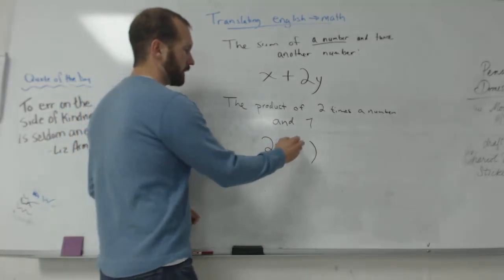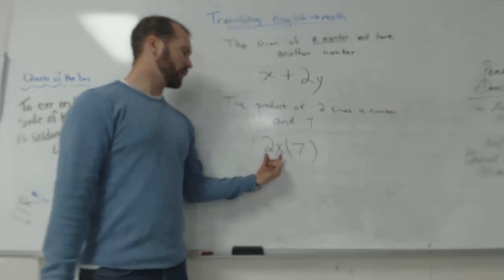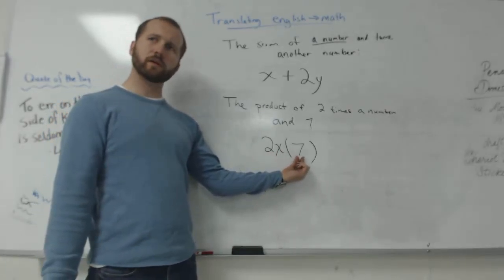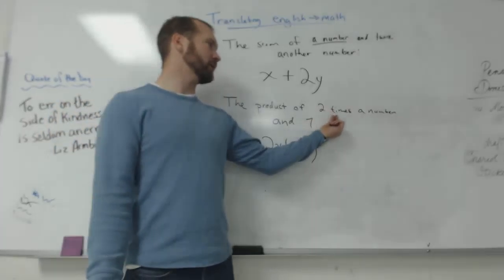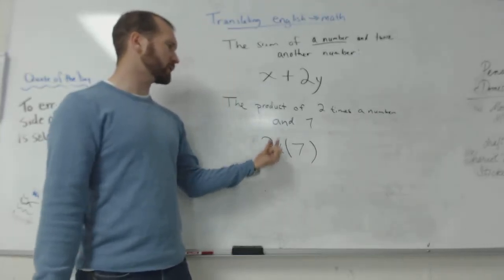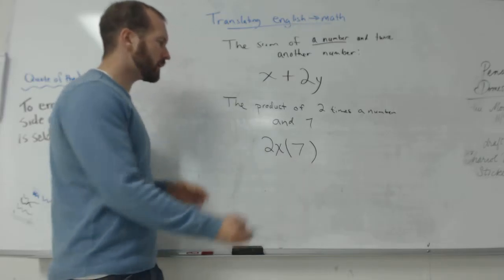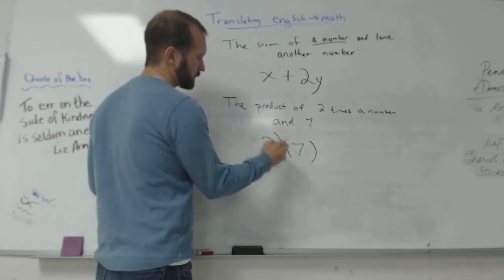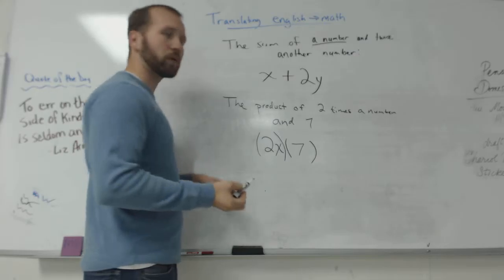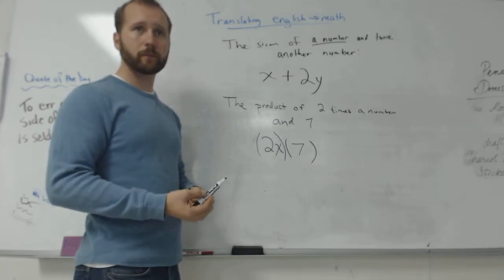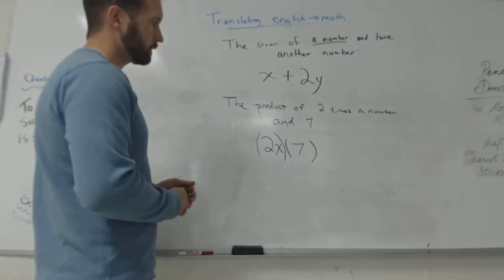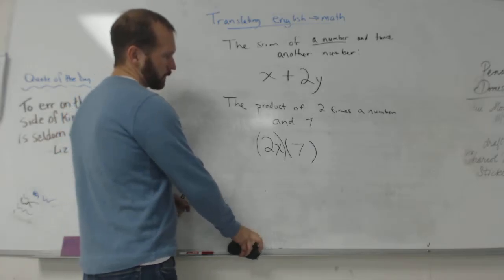So 7 is, it doesn't really matter in this case which one I put here and which one I put here. But I'm just following it literally. 2 times a number, so I'm putting that first. And 7. Now, sometimes you'll want to actually put parenthesis around both the sets of them.